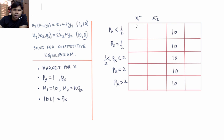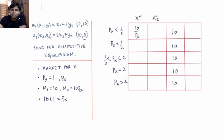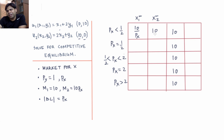When px is less than 1/2, individual 1 will demand only x, so his demand is m1 divided by px, which is 10/px. Individual 2 will also demand only x because px is less than 1/2, which is also less than 2, so his demand is m2 divided by px, which equals 10. Clearly, 10/px plus 10 is always greater than 10, so there is no equilibrium when px is less than 1/2.